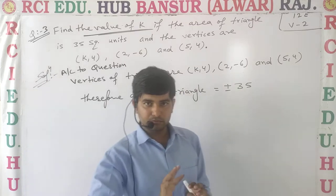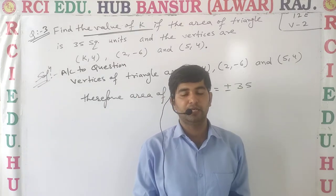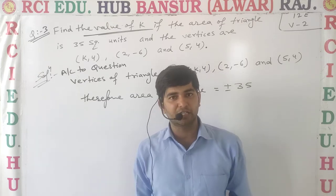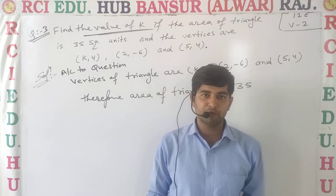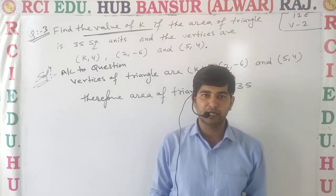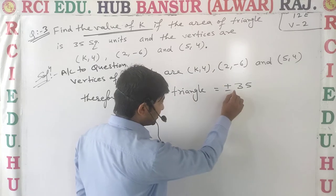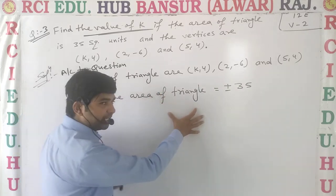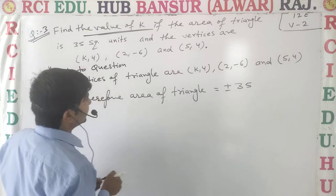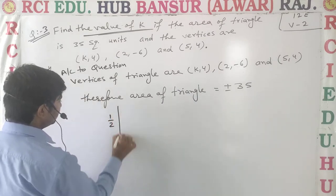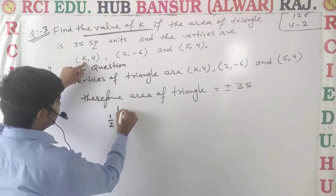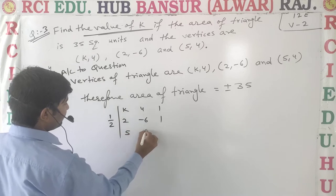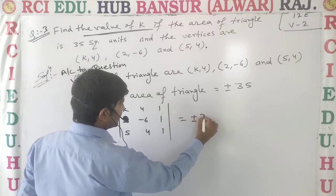When you have the area and three vertices and have to solve the question, you apply the determinant formula. Here 1 by 2 is the value, and we set up the matrix with K, 4, 1; 2, -6, 1; 5, 4, 1 equal to plus minus 35. Multiplying both sides by 2 gives plus minus 70.